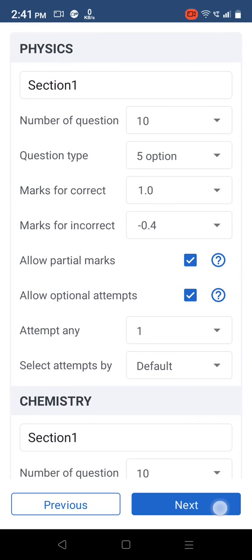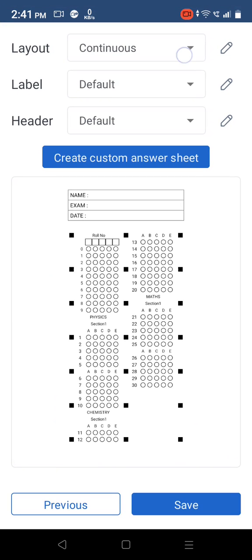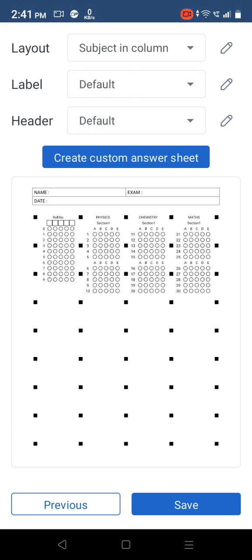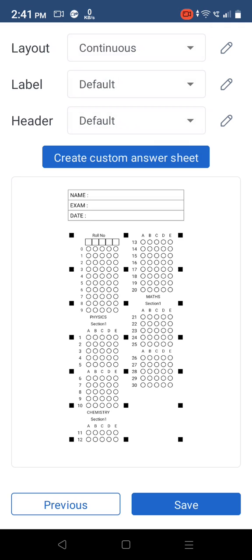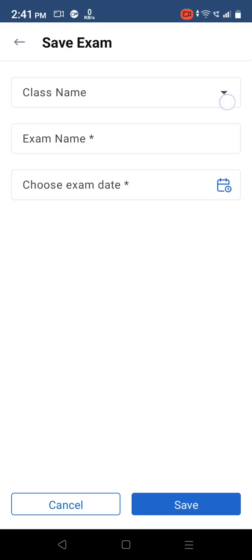Move to the next screen. Select subject in column option to place each subject in a separate column on the sheet, or continuous to place all questions sequentially. Tap on Save. Provide more exam information and save.